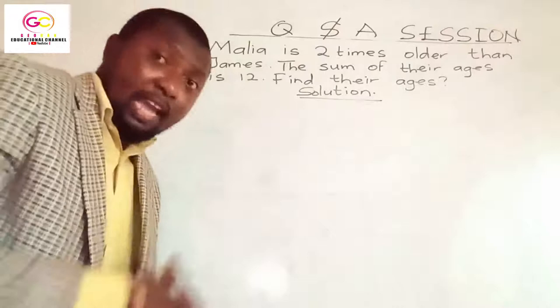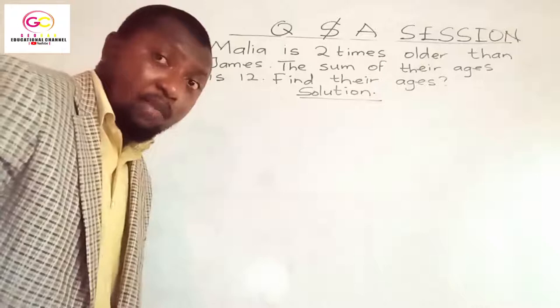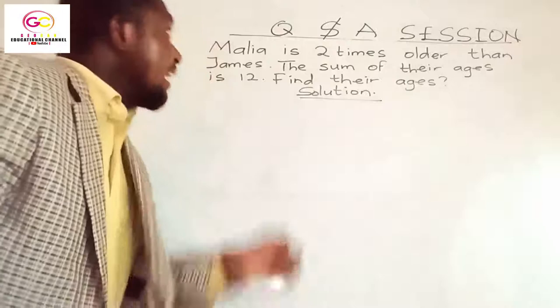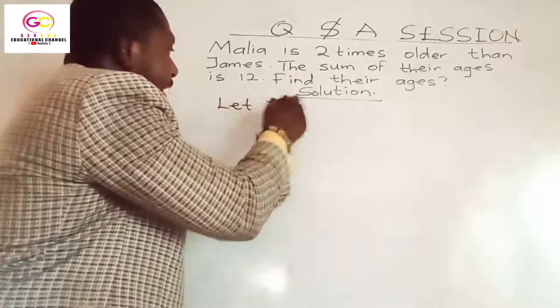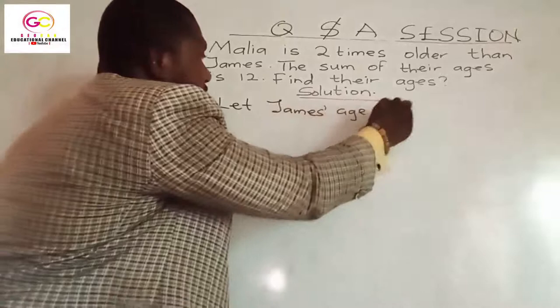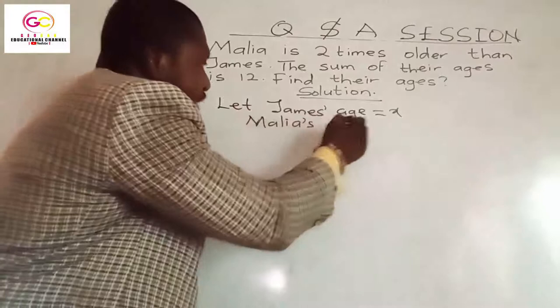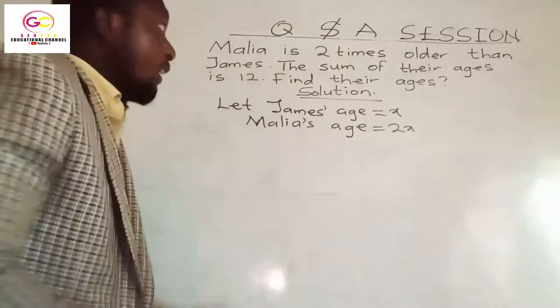Good. Now we don't know the ages of Malia and James, so we can represent them with variables and form expressions as we do in algebraic expressions. So we can let James's age equal X. Because they are saying Malia is two times James' age, Malia's age will be 2X — that's two times X.